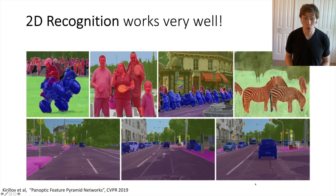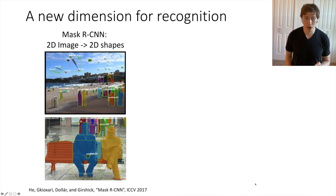The problem is that the world is not two-dimensional. Our computer vision systems should be able to understand images not just in two dimensions, but also in three dimensions. This is a research direction we've been pushing for a little more than a year now — extending all of this great work in 2D recognition and trying to push it into the third dimension.